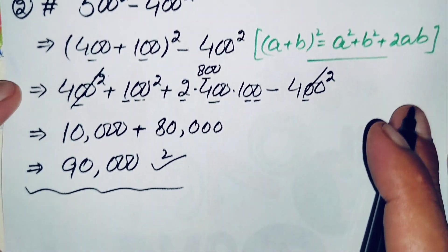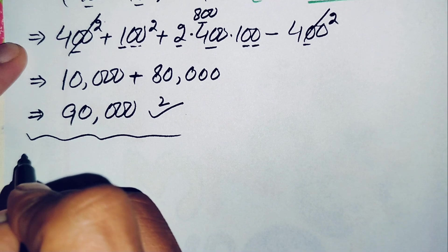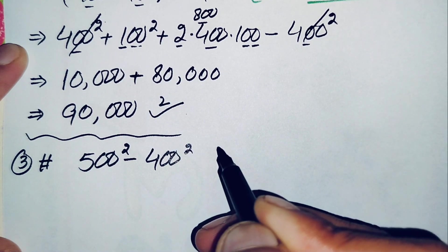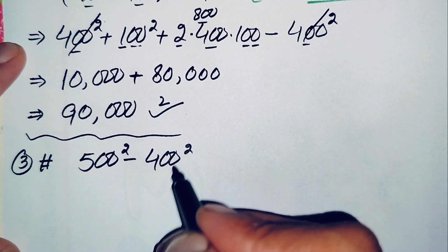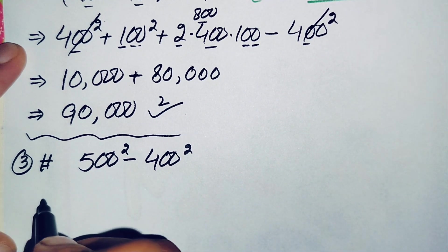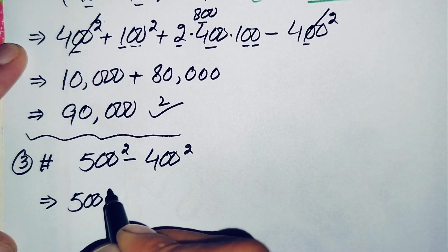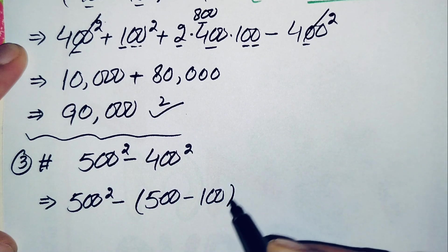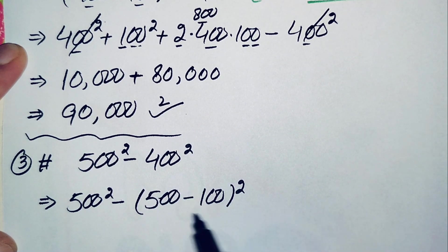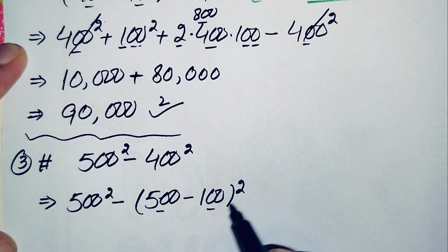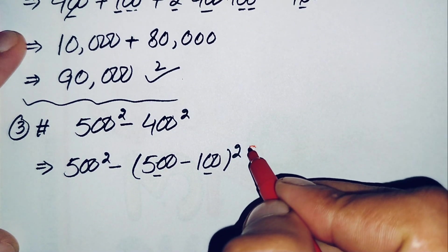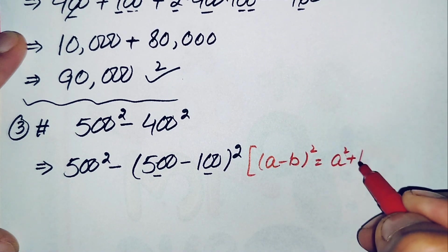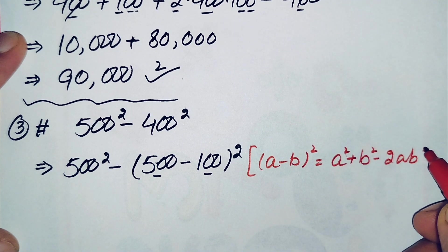Now we will solve this problem using the third method. We again write 500² minus 400². In the third method we will change 400 to the difference of 500 minus 100, so we write this as 500² minus (500 minus 100) whole squared. We will use the algebraic identity (a minus b)² = a² + b² minus 2ab.